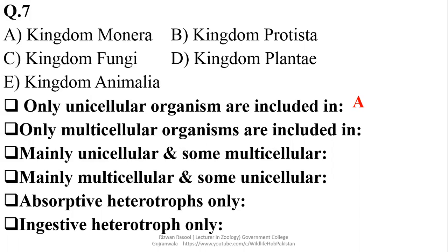And only multicellular organisms they are included in Kingdom Planti as well as Kingdom Anemilia. They include multicellular organisms only, so D and E. Mainly unicellular and some multicellular organisms are included in Kingdom Protista. As most of the organisms over there are unicellular but some may be multicellular. As far as many multicellular and some unicellular organisms are asked, it will be fungi. Right option is Charlie. The fungi they have yeast as unicellular representatives while most of the other fungi they are multicellular.